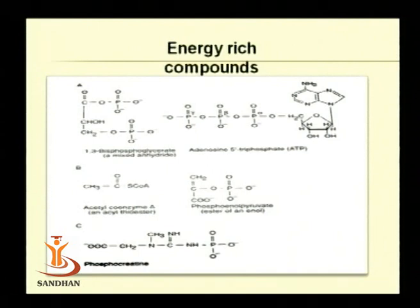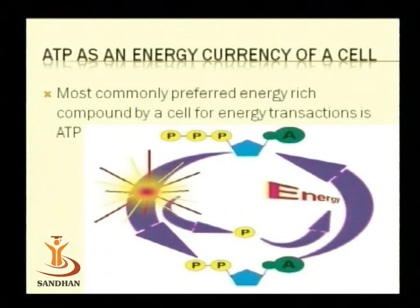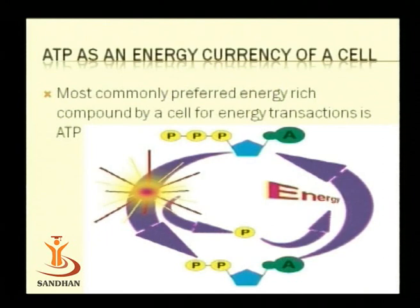By hydrolysis of the phosphoanhydride bond, the required amount of energy can be generated as and when required. The most common source of energy is ATP, which works not only as a source of energy during reactions but also as a phosphate group donor. You can see the structure of ATP and the high-energy bonds — two phosphoanhydride bonds — highlighted in the model.